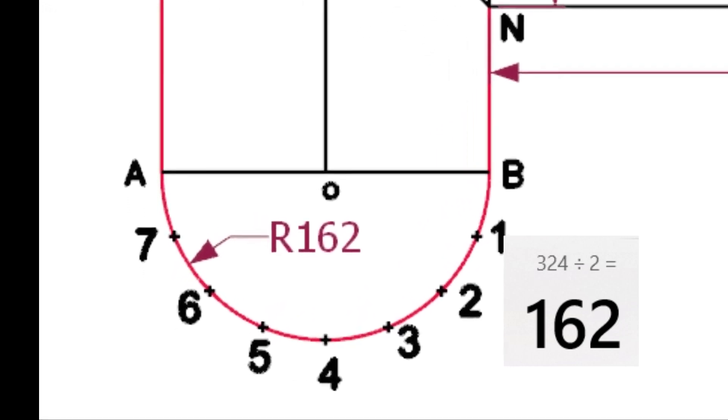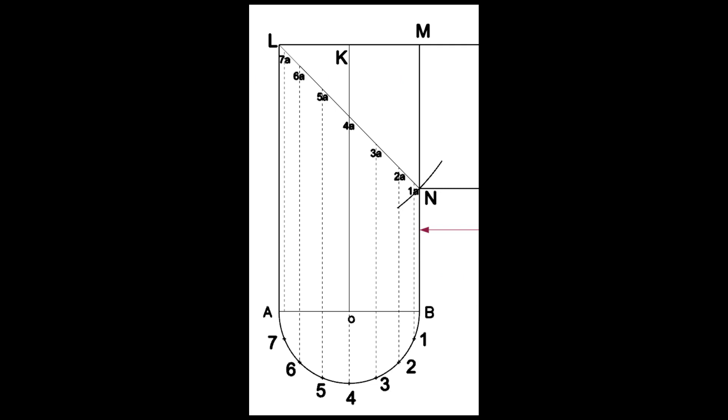Draw a half circle centering O and divide the circumference into eight equal parts. Draw lines 77A, 66A, etc., intersecting the line LN.